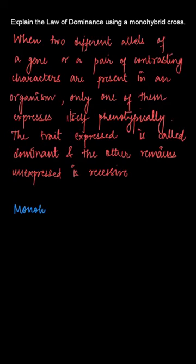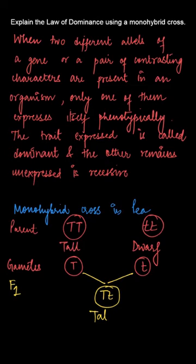Now, let's understand the law of dominance using a monohybrid cross. So, we take a pair of contrasting characters as the height of the plant. One parent is tall with genotype TT and one parent is short with genotype tt.